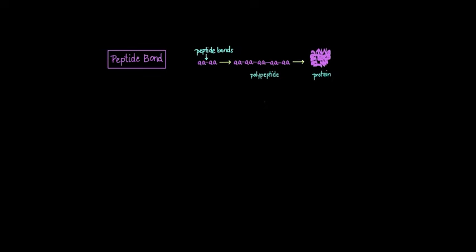So let's review the structure of an amino acid really quickly. Here we have our backbone. We have our amino group, our carboxylic acid group, here's our alpha carbon, and then the R represents our side chain.